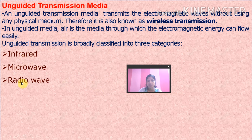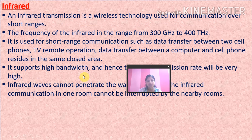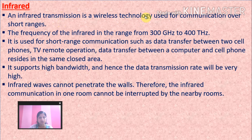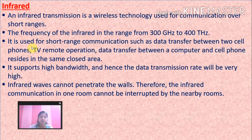Infrared — as mentioned in the previous class, we use it in TV remotes. Infrared transmission is a wireless technology used for communication over short ranges — very small distances, like just a meter when sitting in front of your TV using a remote. The frequency of infrared is in the range of 300 GHz to 400 THz.